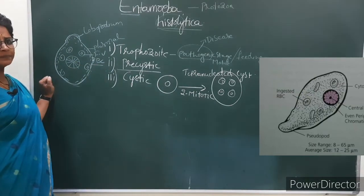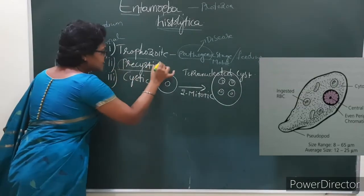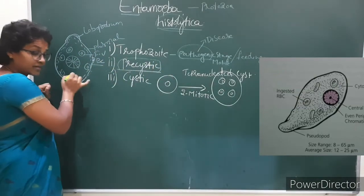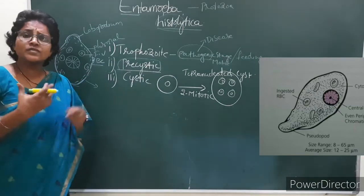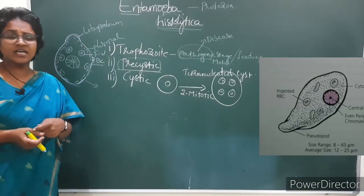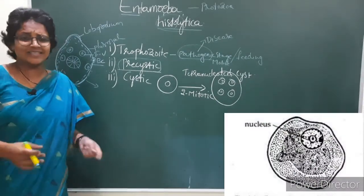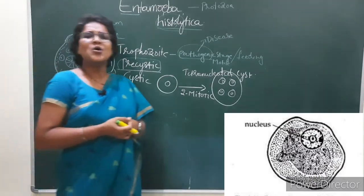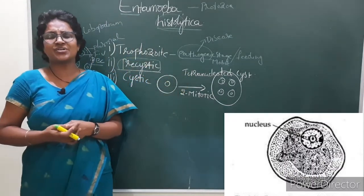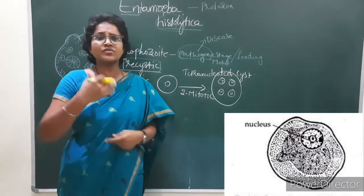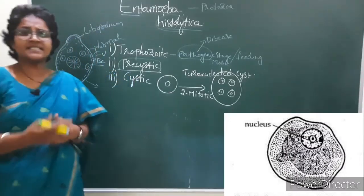The trophozoite stage converts into the pre-cystic stage. During the feeding stage, it stores its food material. In the pre-cystic stage, it is non-pathogenic, non-feeding, and non-motile. There is no need to move, so it doesn't. It is a non-pathogenic stage that wants to convert into another stage to increase its population, entering the pre-cystic stage.